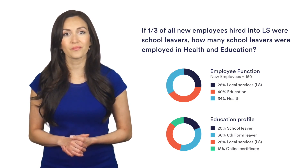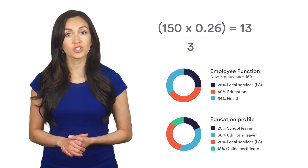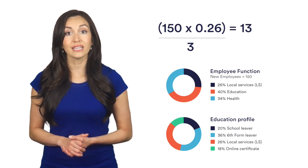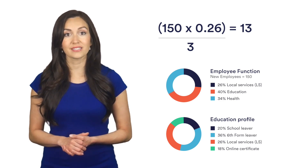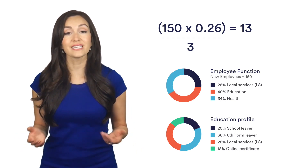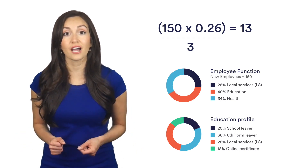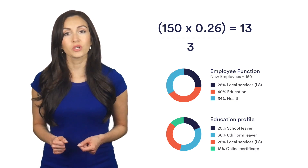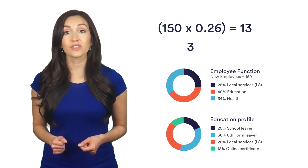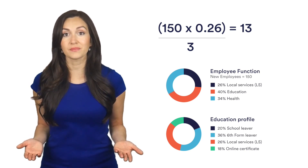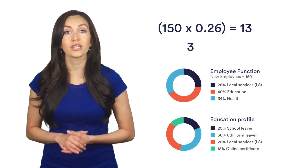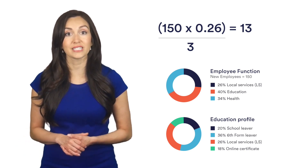Let's work it out. We are told there are 150 new employees in total and we need to find one third of LS employees, which we know is 26% of 150, which leaves us with 13 school leavers employed in LS. 150 times 0.26 equals 13.